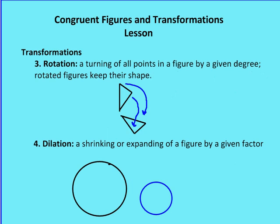Okay, two more to give you on transformations. One is a rotation, and the other is a dilation. In a rotation, I'm just turning all the points in a clockwise or counterclockwise direction by a given degree. And the rotated figures keep their shape. So these two triangles are congruent to each other. I'm just rotating each of the points by a given amount. Again, the figure retains its shape, and it ends at a particular location.